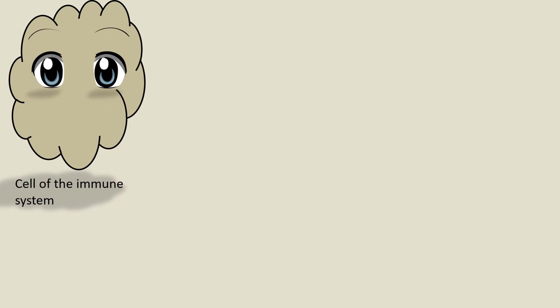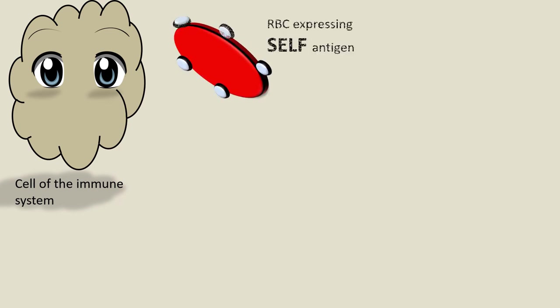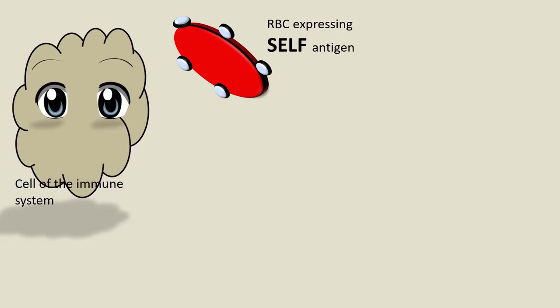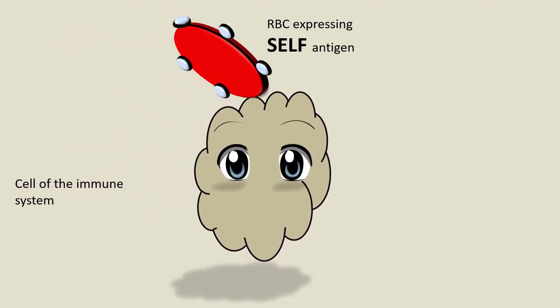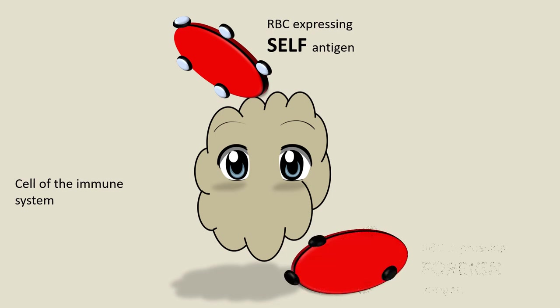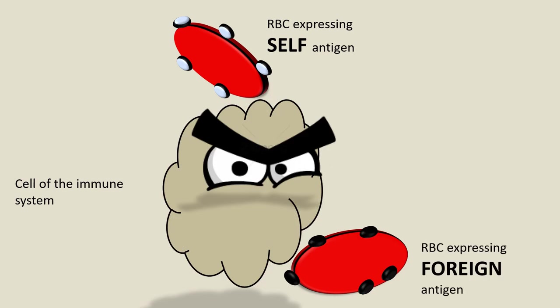As we know, the cells of our immune system can differentiate between a self-cell and a foreign cell based on the presence of these antigens. When an immune cell comes in contact with an RBC that is expressing self-antigens, the cell is very happy. As the cell moves around in the body, it keeps meeting RBCs expressing self-antigen. However, if it meets an RBC expressing a foreign antigen, the cell becomes very angry. These foreign antigens are like uninvited guests in our body, and thus the immune cell needs to react to their presence.